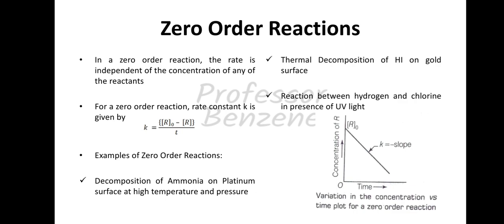Let's talk about zero order reactions. What is a zero order reaction? In a zero order reaction, the rate is independent of the concentration of any of the reactants. For a zero order reaction, the rate constant k is given by: k equals R₀ minus R upon t. That's how the rate constant for a zero order reaction is calculated.